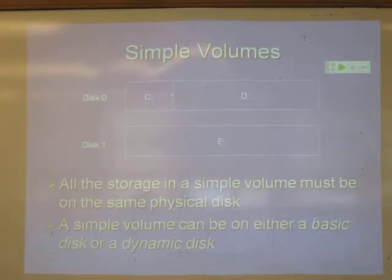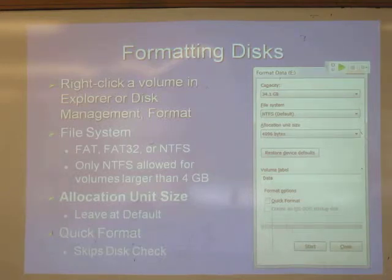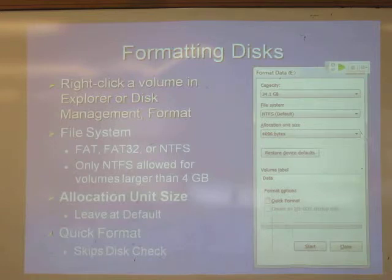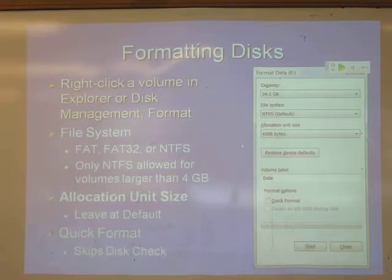Simple volumes are just blocks of continuous space — from sector X to sector Y is C, this part is D, that whole disk is E. You can make a simple volume on a basic disk or a dynamic disk. To format it, just right-click and format, then choose your file system and allocation unit size. You almost always want NTFS, though you can make FAT partitions if you want — they're out of date and not very useful. The allocation unit size is the smallest possible amount of disk that can be given a name. If you store a notepad file with only a few hundred letters, it will still use 4096 bytes because that's the smallest allocatable unit. Making it larger helps find files faster but wastes more space, so usually the default is fine.